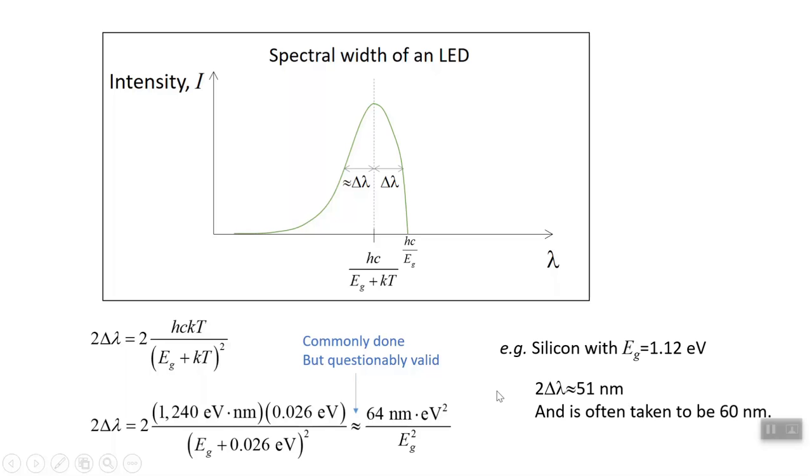Because we're talking about a width, delta lambda, of an already skewed asymmetric curve, it's just rounded up for most people. Most people are happy just saying it's 60 nanometers.